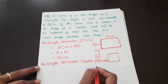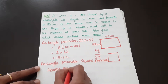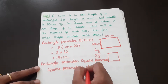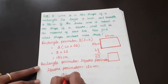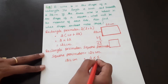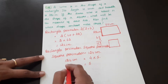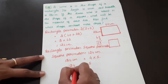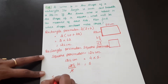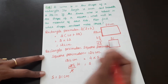Square perimeter is equal to 4 into S. So 124 centimeters equals 4 into S. Moving to the left hand side: S equals 124 by 4. So S is equal to 31 centimeters.